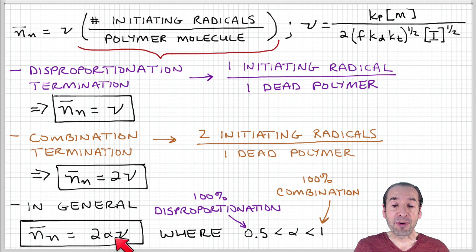In other words, if α has a value of a half, we have 100% disproportionation. And if α has a value of one, then we have 100% combination termination.